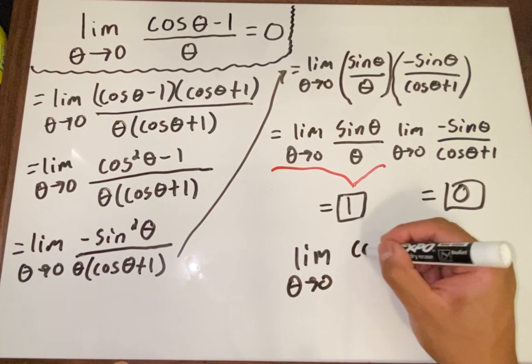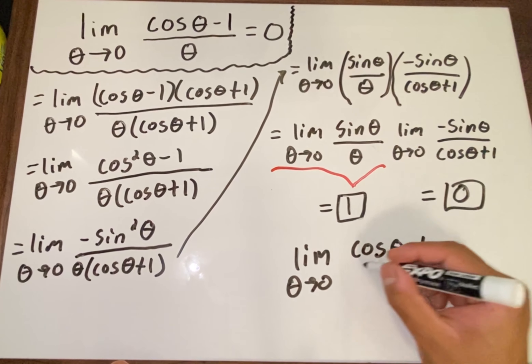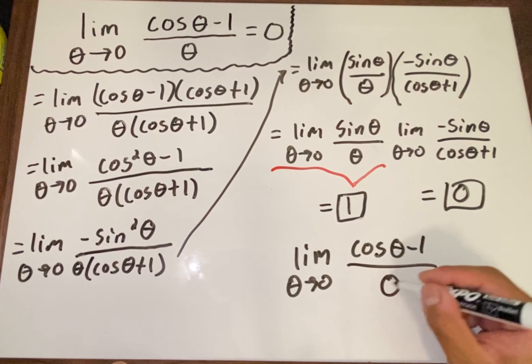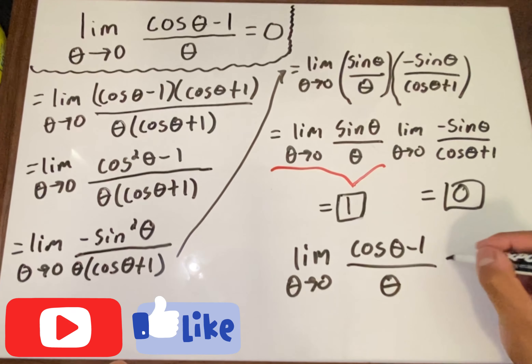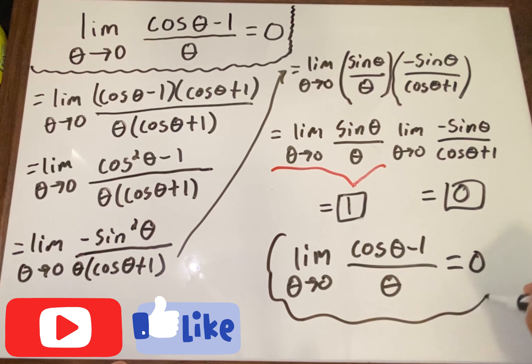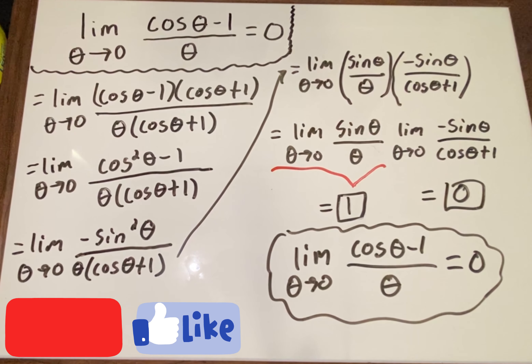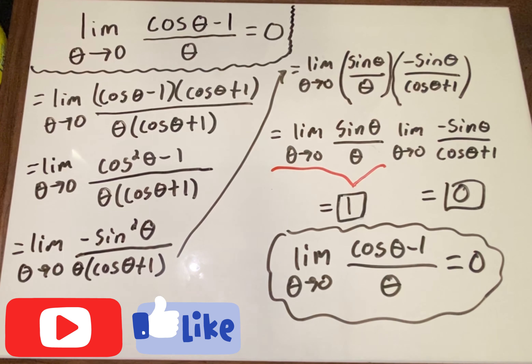So we have 1 times 0, which means zero. We can now claim that the limit as θ approaches zero of (cos θ - 1)/θ is equal to zero. Thanks for watching — please leave your comments and concerns!